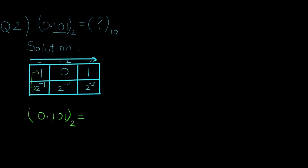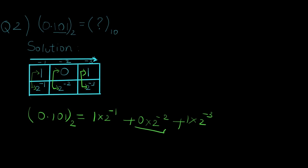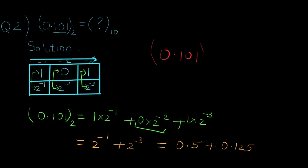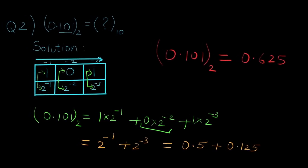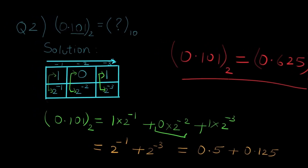When we apply positional weights, which are always powers of 2, we have 2 raise to minus 1, 2 raise to minus 2, and 2 raise to minus 3. Calculating the final value of 0.101 binary to decimal: 1 into 2 raise to minus 1, plus 0 into 2 raise to minus 2, plus 1 into 2 raise to minus 3. The middle term is 0 so we ignore it. The final value is 2 raise to minus 1 plus 2 raise to minus 3, which equals 0.5 plus 0.125, giving us 0.625 in decimal.